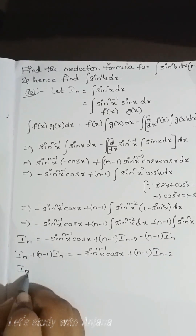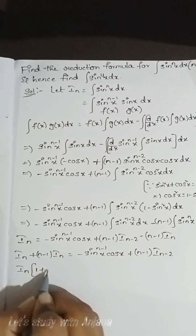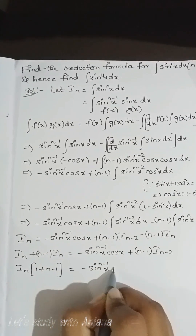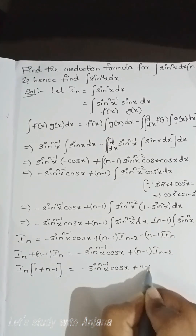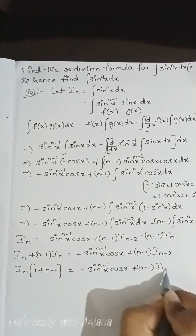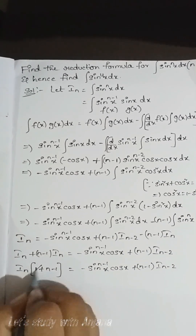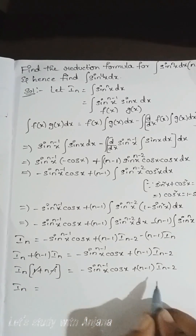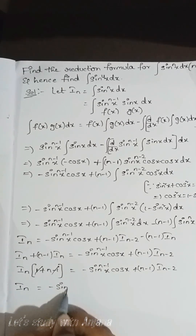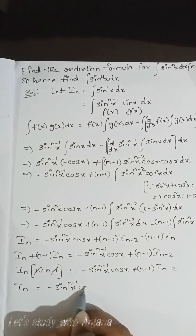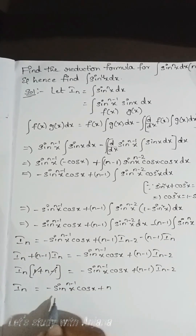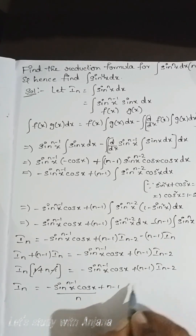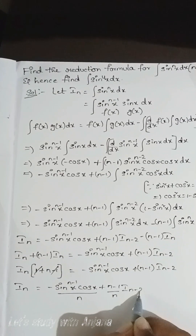Taking In common on the left: In·[1 + (n-1)] = In·n = −sin^(n-1)(x)·cos(x) + (n-1)·I(n-2). Dividing both sides by n: In = −sin^(n-1)(x)·cos(x)/n + (n-1)/n · I(n-2). This is the reduction formula for sin^n(x).